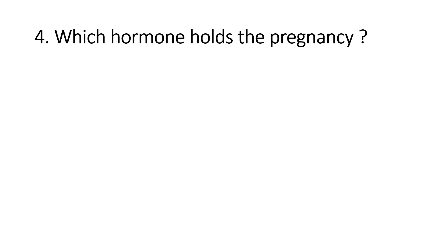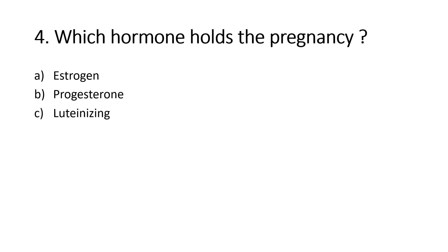Which hormone holds the pregnancy? Option A, Estrogen; Option B, Progesterone; Option C, Luteinizing hormone; Option D, All of the above. Right answer is Option B, Progesterone. Progesterone is essential for implantation and maintenance of pregnancy.